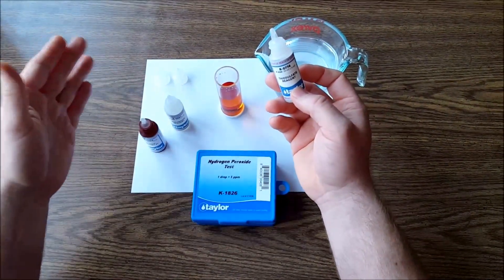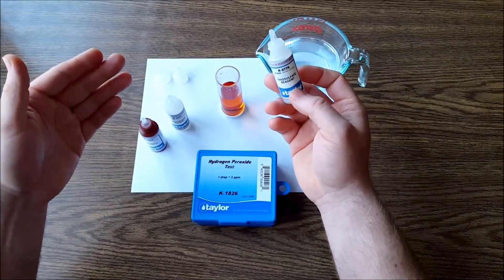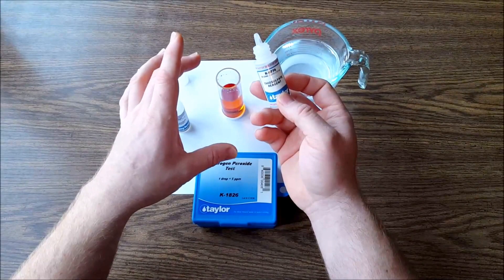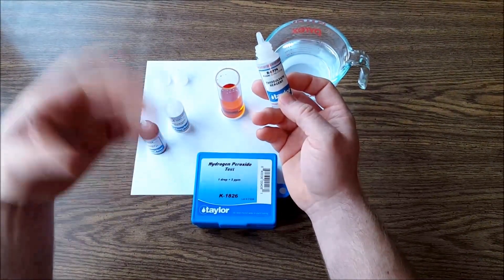When the color is completely clear, that's how much hydrogen peroxide you have in there. So however many drops that you put in there to make it clear, multiply that by five and that's your total parts per million of hydrogen peroxide that's inside of your float tank.